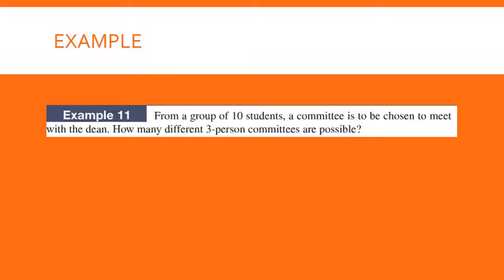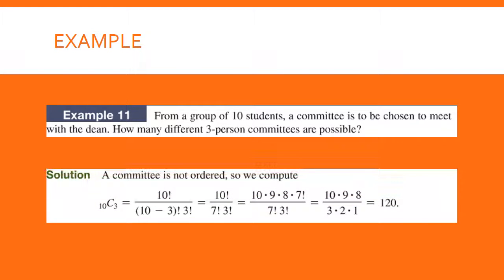Try example 11: from a group of 10 students, a committee is to be chosen to meet with the dean. How many different three-person committees are possible? This is a combination problem. It's 10 factorial over (10 minus 3) factorial times 3 factorial. You can write 10 factorial as 10 times 9 times 8 times 7 factorial, and the 7 factorial cancels with the denominator, making the arithmetic easier if you're doing it by hand.